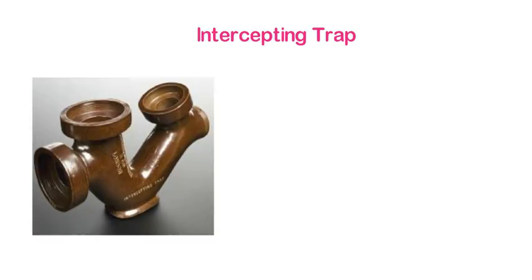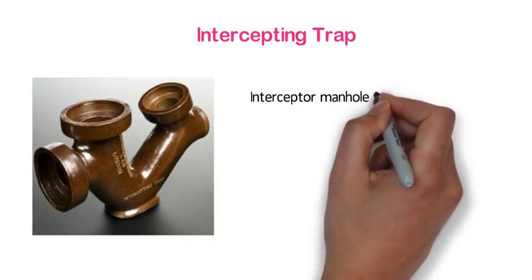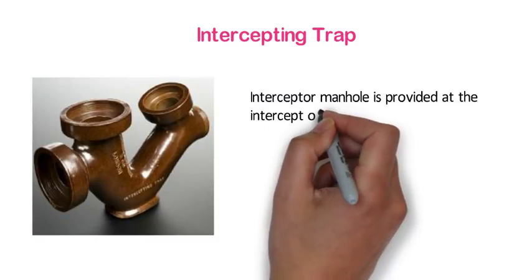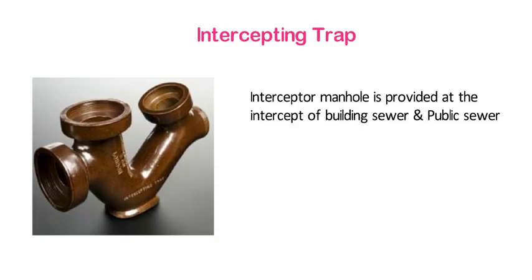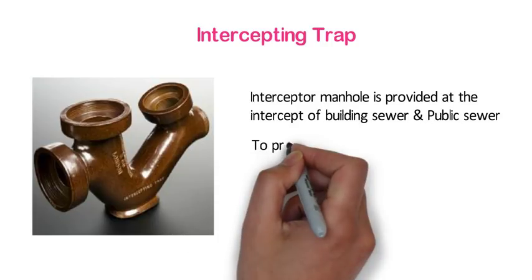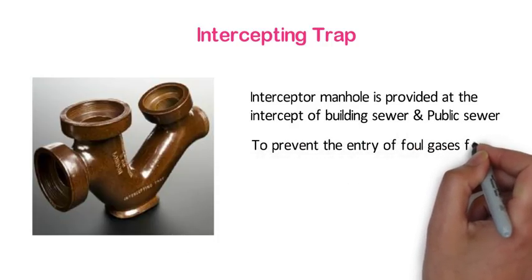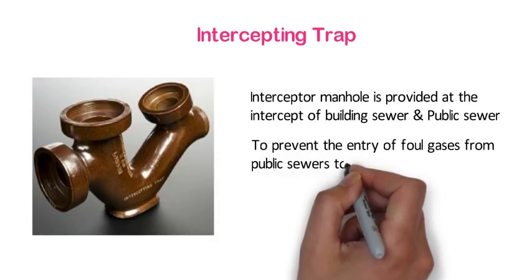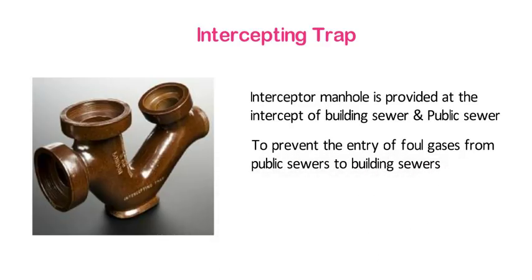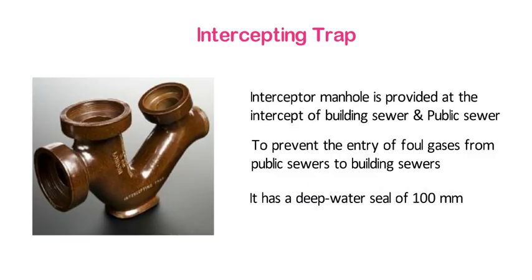Intercepting trap. An interceptor manhole is provided at the intercept of the building sewer and the public sewer. This trap is provided at the last manhole of the building sewerage to prevent the entry of foul gases from public sewers to building sewers. It has a deep water seal of 100 mm.